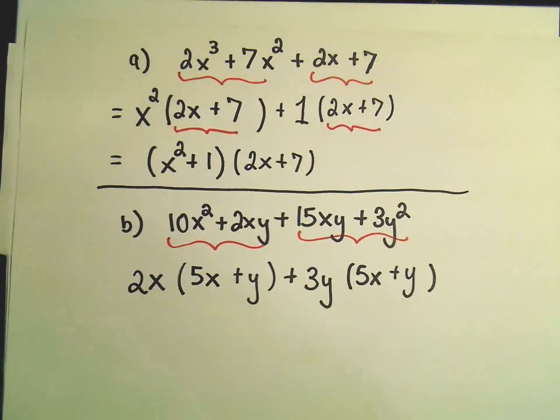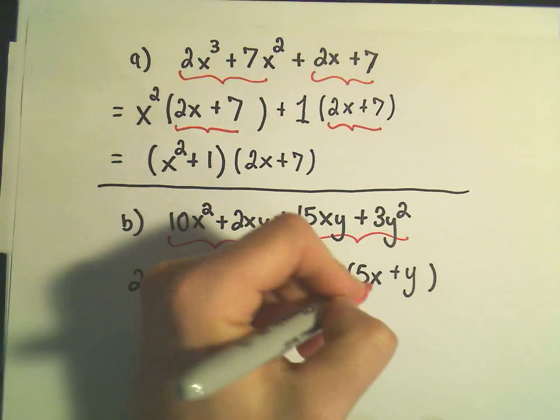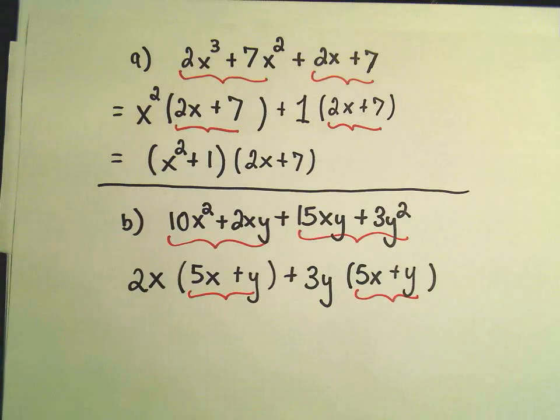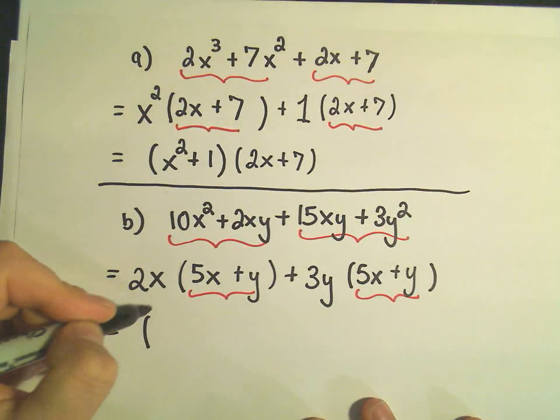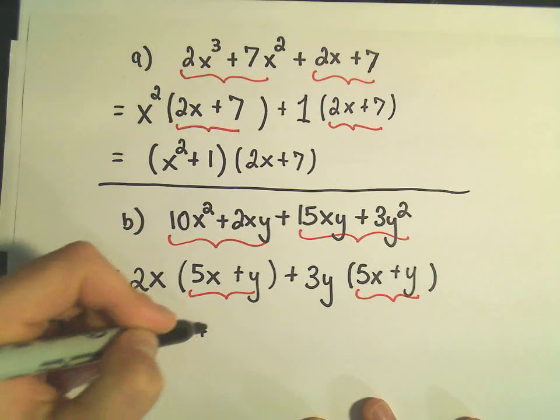So again, we've got the same thing in the parentheses. So again, that means we can rewrite this as the stuff out front, which is 2x plus 3y.